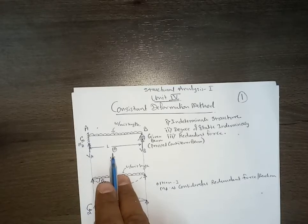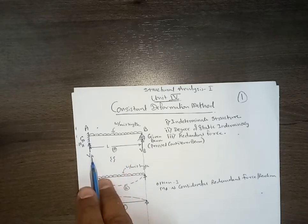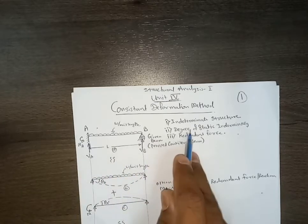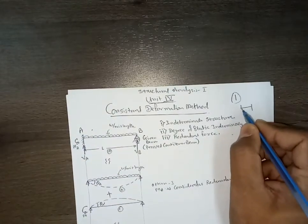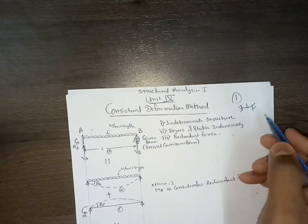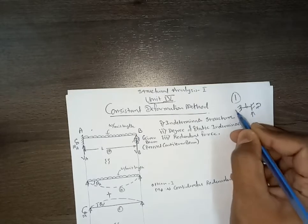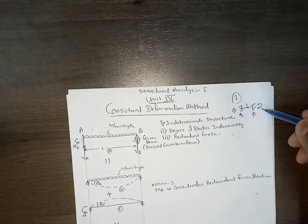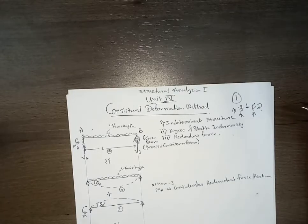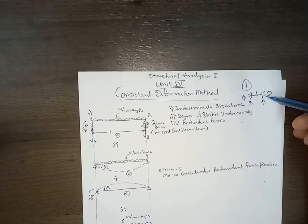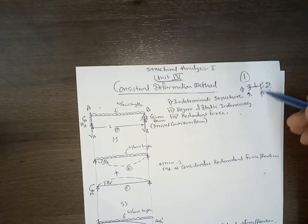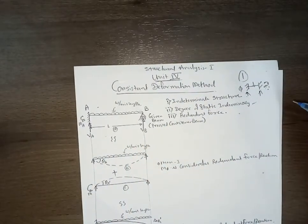So three unknowns minus two equilibrium conditions gives one degree of static indeterminacy. For a fixed beam, where both ends are fixed, there are four reaction components. With only two available equilibrium conditions and four unknowns, this problem is statically indeterminate to the second degree — a higher-degree indeterminate problem. You should be able to easily calculate the static indeterminacy of any given beam.